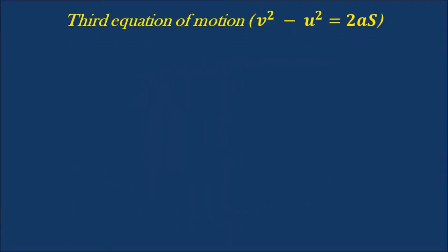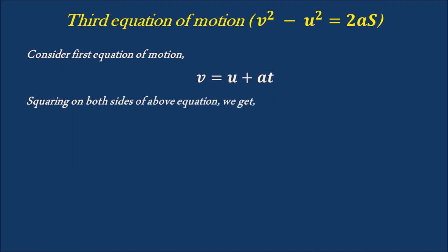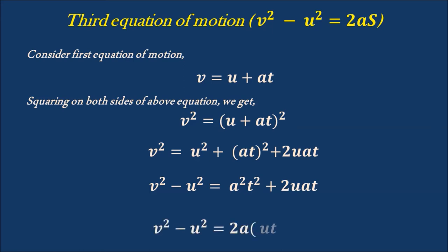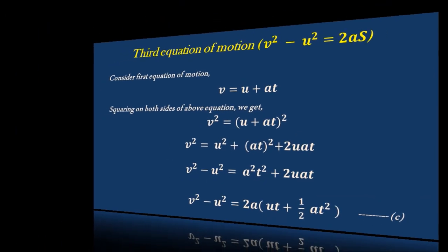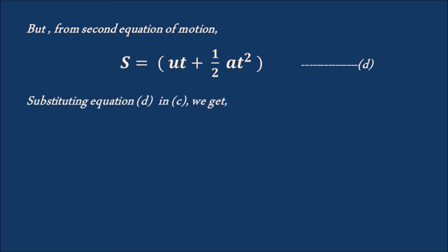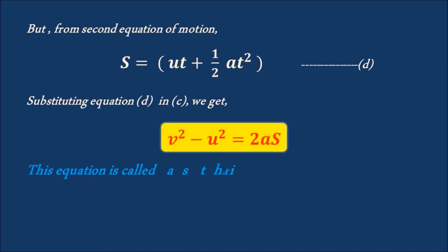Now, let's derive the expression for the third equation of motion, that is, V square minus U square is equal to 2AS. Consider the first equation of motion: V is equal to U plus AT. Squaring on both sides of the above equation, we get V square is equal to U plus AT whole square. That is, V square is equal to U square plus A²T² plus 2UAT. That is, V square minus U square is equal to A²T² plus 2UAT. By taking 2A as common on the right-hand side, we get V square minus U square is equal to 2A into UT plus half AT square — let it be equation C. But from the second equation of motion, S is equal to UT plus half AT square — let it be equation D. Substituting equation D in C, we get V square minus U square is equal to 2AS. This equation is called the third equation of motion.